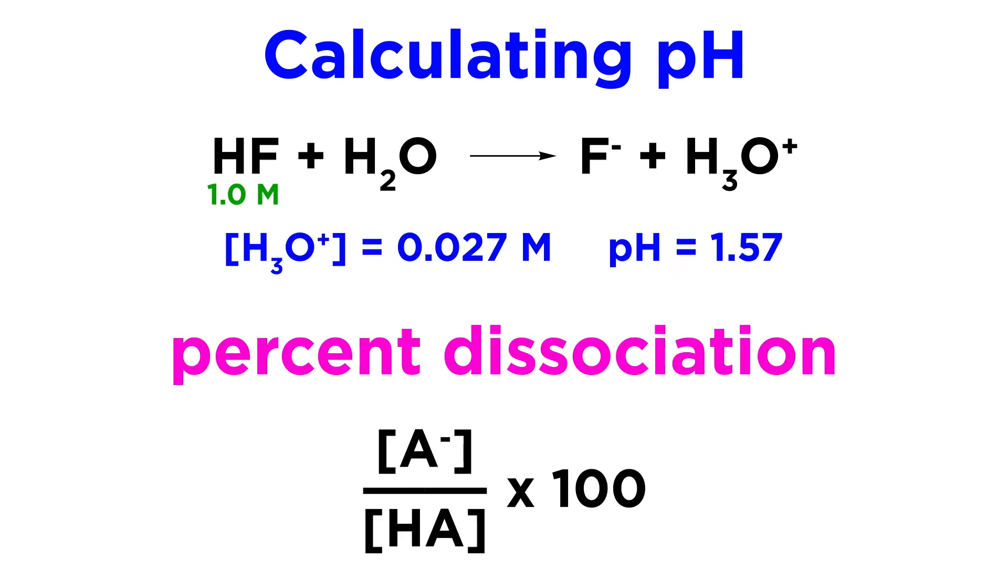One useful parameter we can use to quantify the strength of a weak acid is its percent dissociation. This is equal to the concentration of dissociated species over the initial concentration of the acid, times 100. So it is the fraction of the acid molecules that dissociate. For example, earlier we saw that in a 1 molar HF solution,